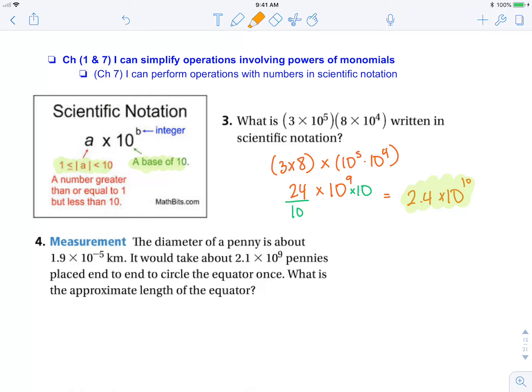The diameter of a penny is about 1.9 times 10 to the negative 5th kilometers. It would take about 2.1 times 10 to the 9th pennies placed end to end to circle the equator once. What is the approximate length of the equator?